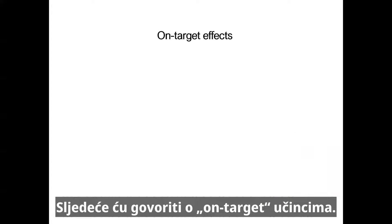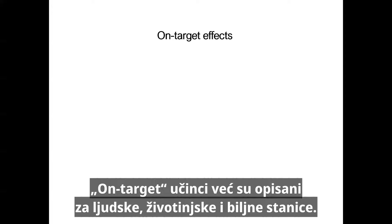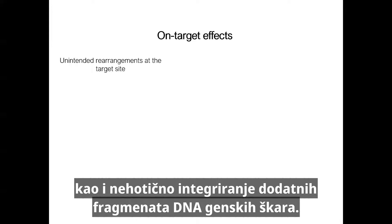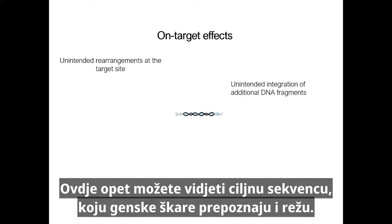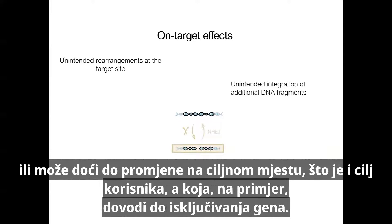Next, I will talk about on-target effects. On-target effects can occur at the target site and on DNA regions nearby, and have already been described in human, animal, and plant cells. On-target effects are unintended rearrangements at the target site, as well as unintended integration of additional gene scissor DNA fragments. The DNA double strand break can either be repaired so that the original state is restored, or a change can be induced at the target site as intended by the user, leading, for example, to a gene knockout.